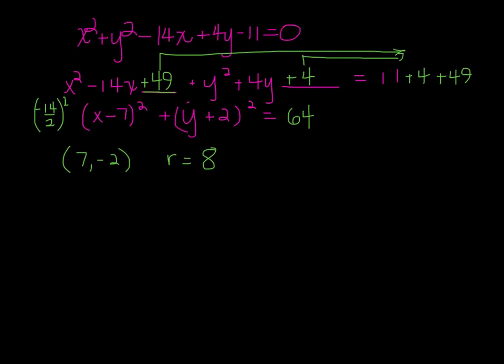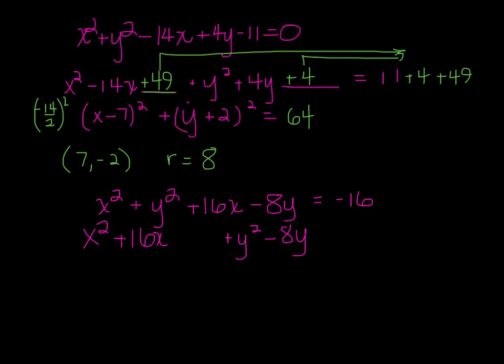Let's try this one. Okay, get the x's and y's together. 16 divided by 2 is 8, squared is 64 here and here. 8 divided by 2 is 4, squared is 16 here and here. So again, this is going to be x plus 8 quantity squared plus y minus 4 quantity squared equals 64.